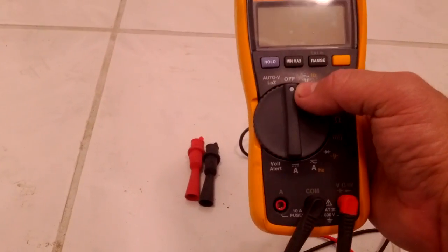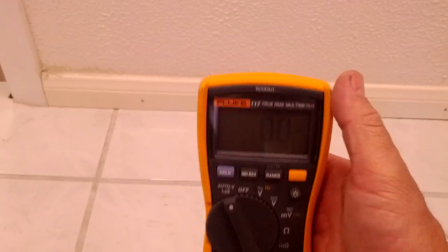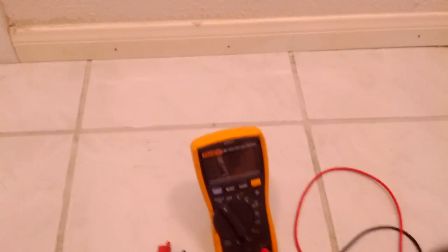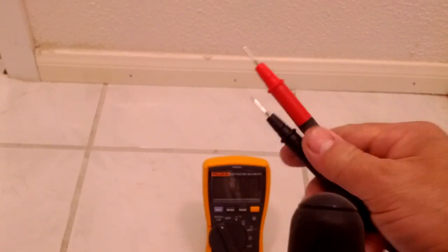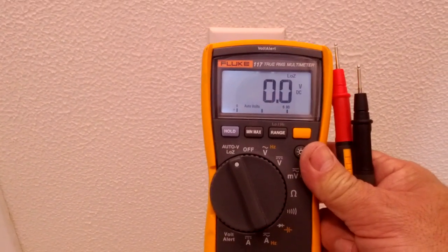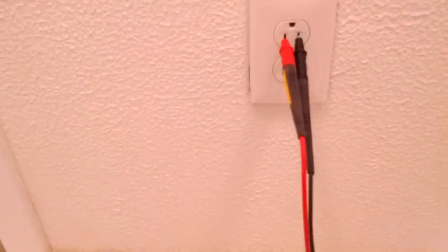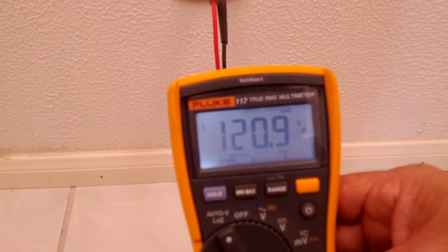The other would be this auto V function that you can see there. It kind of identifies automatically if you're going to use this in an application where you're going to use the probes for DC and AC current. So you can see in this meter that this is set on the auto V function. If I put these probes in the outlet, you see the reading that I have.